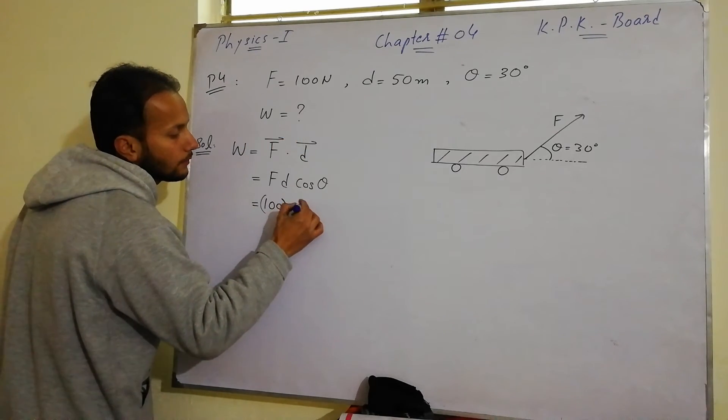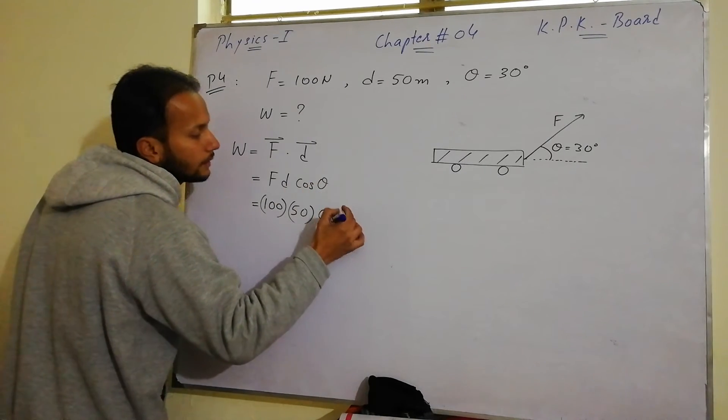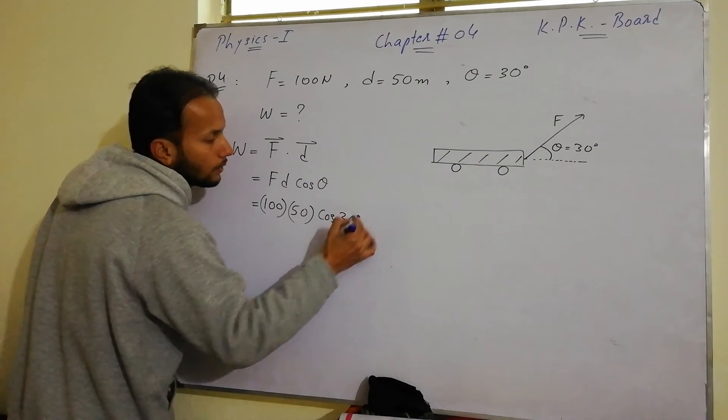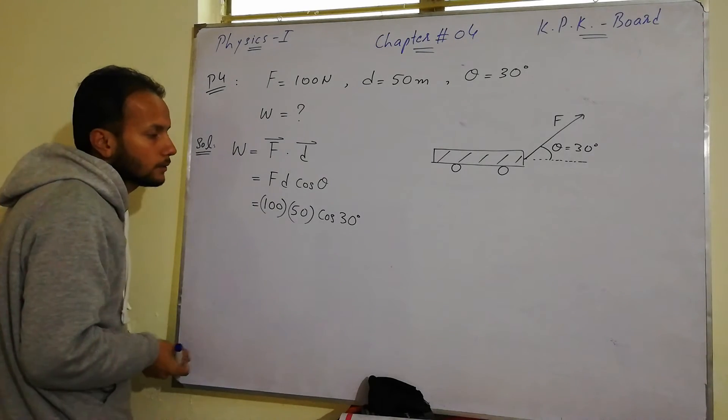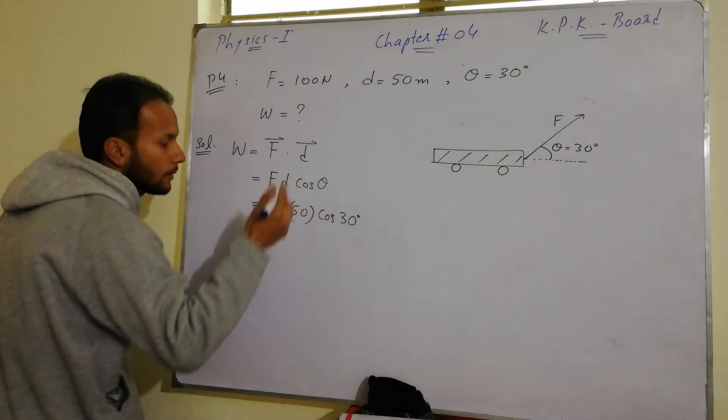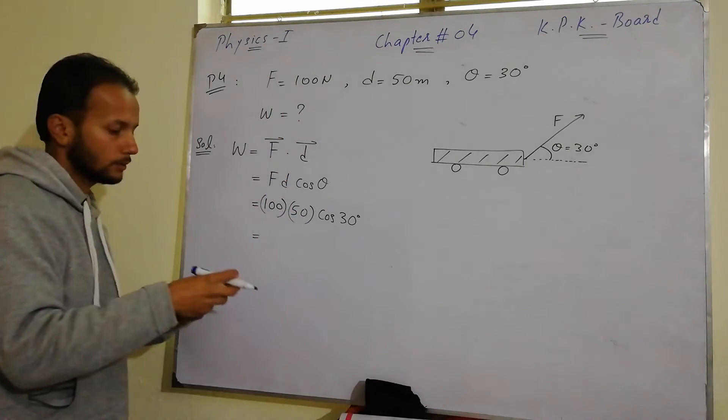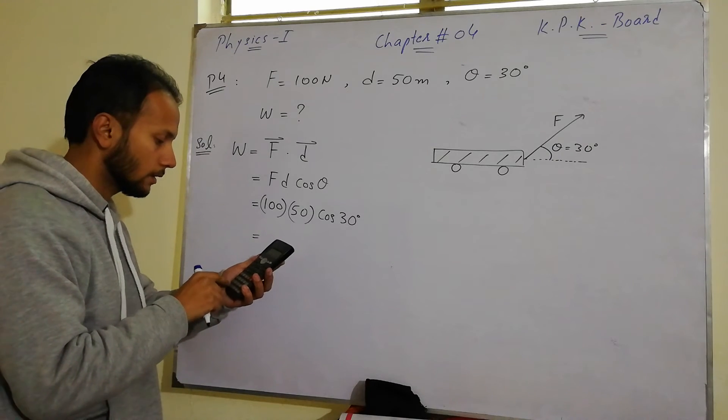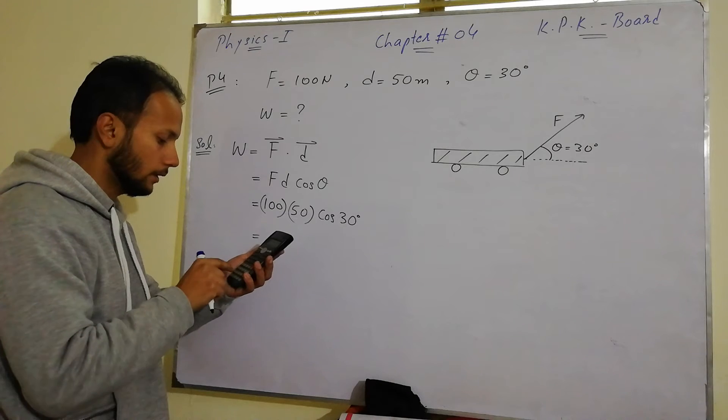So force is 100, I showed you, so just multiply. 100 times 50 times cos of 30 degree.